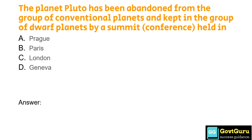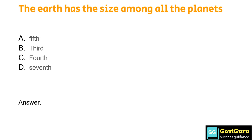The planet Pluto has been removed from the group of conventional planets and kept in the group of dwarf planets by a summit conference held in: Option A: Prague, Option B: Paris, Option C: London, Option D: Geneva. The answer is Option A, Prague. The Earth has which size among all the planets? Option A: Fifth, Option B: Third, Option C: Fourth, Option D: Seventh. The answer is Option A, Fifth.